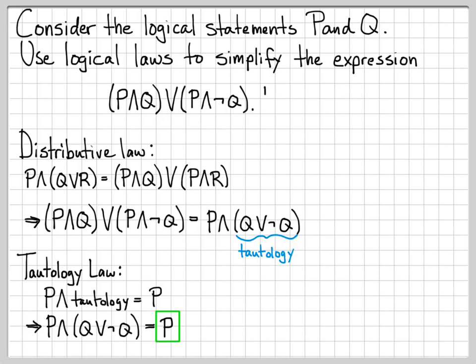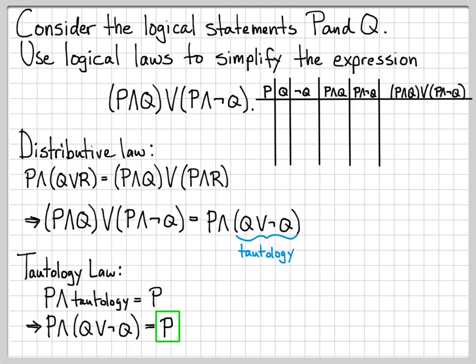Just like in the previous example, we can construct a truth table to sanity check our work. We start by making columns for P and Q and filling those in with every combination — starting with all false, going to all true. Then we make a column for every other piece of the logical expression we need. Since we have a not Q, I'm going to make a not Q column, which I can fill in by taking the not of everything in the Q column.